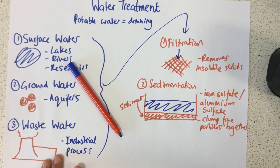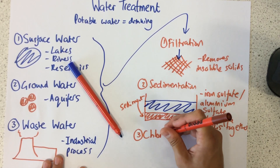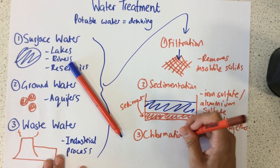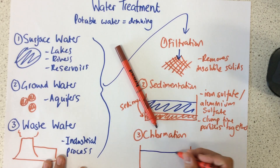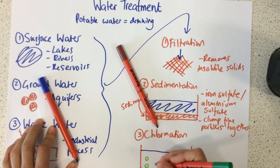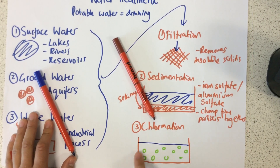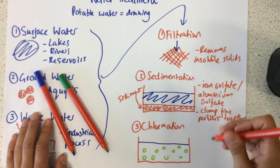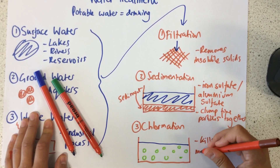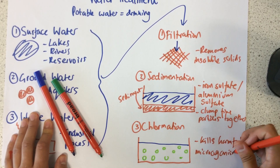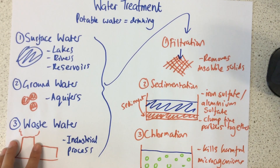There might be some nasty microorganisms in the water that can cause us some harm. So we need to then undergo chlorination. All that you do with chlorination is chlorine is bubbled through the water. By doing this, it kills harmful microorganisms. So now we've taken this water from one of these sources, we've treated it, and it's now safe to drink.